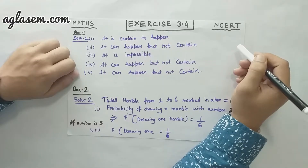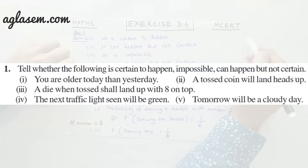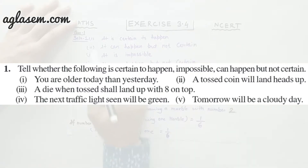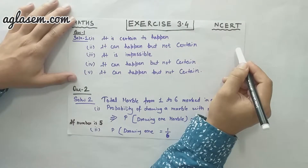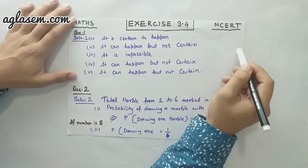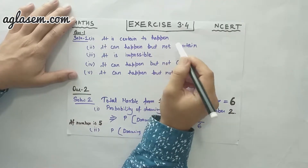The first question is: tell whether the following is certain to happen, impossible, or can happen but not certain. This question has parts, and we have to solve each one by one. The first part is: you are older today than yesterday. It is certain to happen — it's obvious.